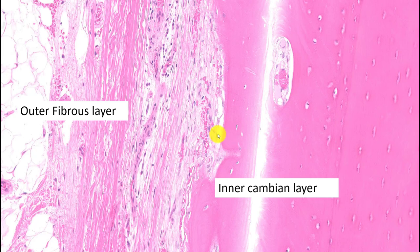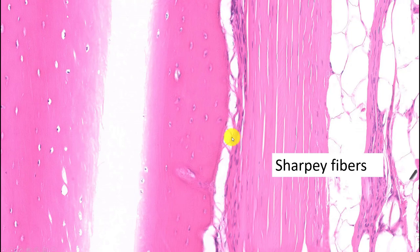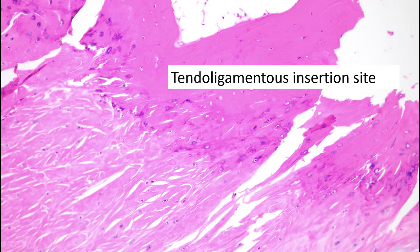The periosteum becomes more obvious when injured or stimulated by a nearby tumor. It has two layers: an outer fibrous layer and an inner cambium layer. Within the inner cambium layer are all the progenitor cells. When you injure the bone, those cells proliferate, differentiate into osteoblasts, and start depositing bone. The bone is connected to the periosteum using Sharpey's fibers, and ligaments also attach to bone, allowing us to move.